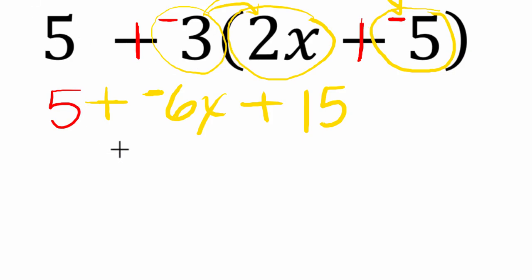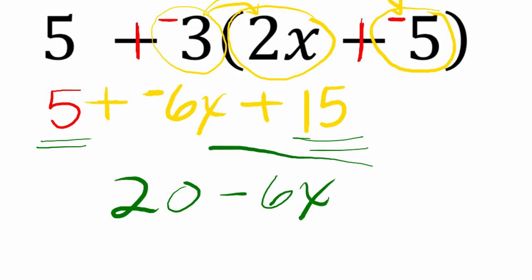And now we can combine like terms. We've got 5 plus 15. Well, that's just 20. Then we add negative 6x, or we can think of that as minus 6x. That's the same expression. Those are equivalent.